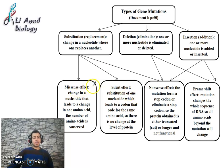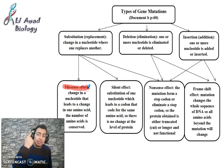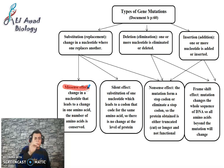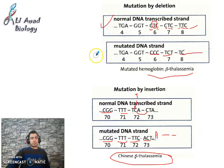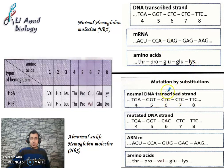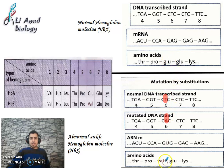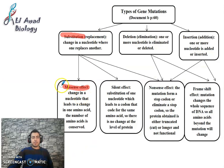The first effect is the missense effect. The missense effect means a change in one amino acid — a change of a nucleotide leads to a change in one and only one amino acid. This is caused only by substitution. For example, T is replaced by A; instead of glutamic acid, valine is produced. A change in one nucleotide leads to a change in one amino acid. This is called the missense effect.